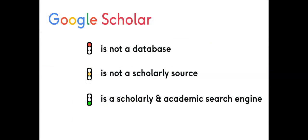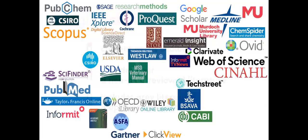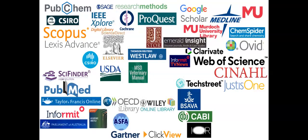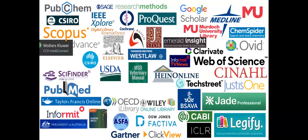Now for some Google Scholar caveats. Google Scholar is not a database — it's a search engine that searches for scholarly and academic literature. Results include peer-reviewed and non-peer-reviewed material, grey literature, and open access content. Use Google Scholar in addition to databases, as no product indexes absolutely all scholarly and academic research papers.